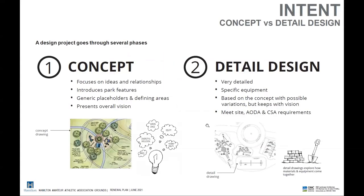I mentioned concept and detailed design, and that we're looking at a concept level right now. On the left side of your screen you'll see a little excerpt from a plan that was a concept — this is not HAAA, but it is showing a representation of a park at conceptual level. We really focus on the ideas and relationships within the park, such as the relationship between play structures, shade structures, and pedestrian pathways. We use generic placeholders and define areas — we use 'playground' opposed to the specific type being put in. It really presents an overall vision. We take that concept once finalized and use it as a roadmap.